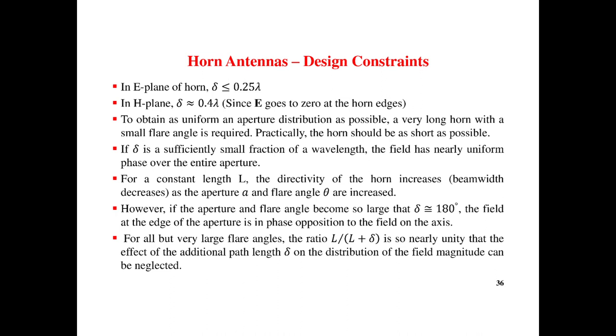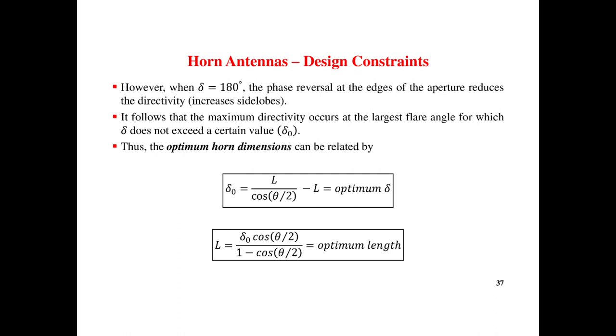The field is nearly uniform phase over the entire aperture. For a constant lambda, the directivity of horn increases with A. However, if the aperture and flare angle are so large, so delta equal to 180 degrees, the field at the edge of the aperture is in phase opposition to the field on the axis.